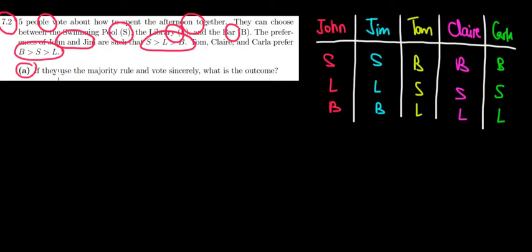Now in part A, if they use the majority rule and vote sincerely, what's the outcome? First of all, if they use simultaneous voting, meaning they vote their most preferred options, what would be the result?